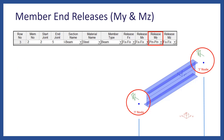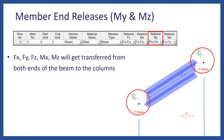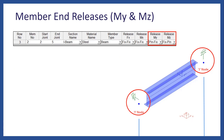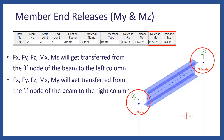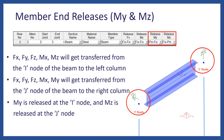Another case is when MY is set as pin-pin and the remaining releases stay fix-fix. FX, FY, FZ, MX, and MZ will get transferred from both ends of the beam to the columns, and only MY is released at both ends. One last case scenario: MY set as pin-fix and MZ set as fix-pin, with the remaining releases staying fix-fix. FX, FY, FZ, MX, and MZ will be transferred from the I node to the left column. FX, FY, FZ, MX, and MY will be transferred from the J node. Basically, MY is released at the I node and MZ is released at the J node.